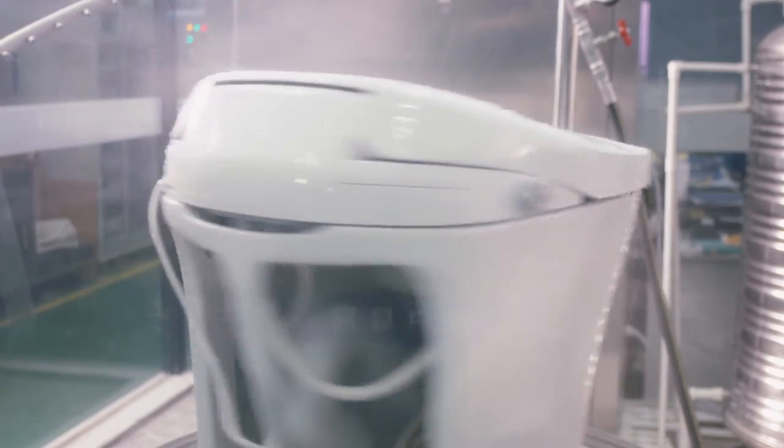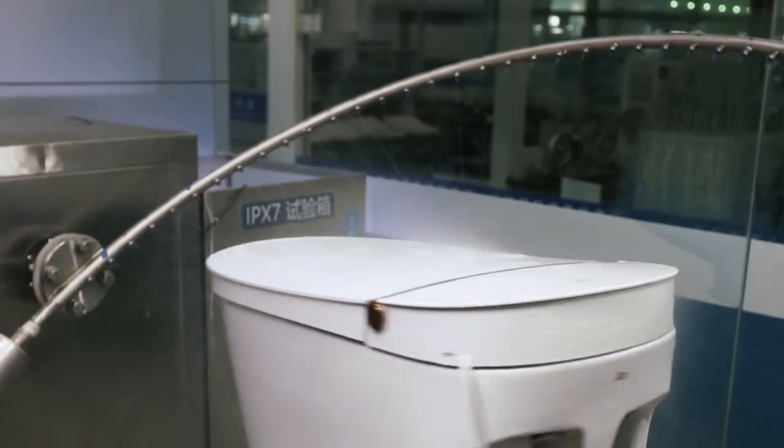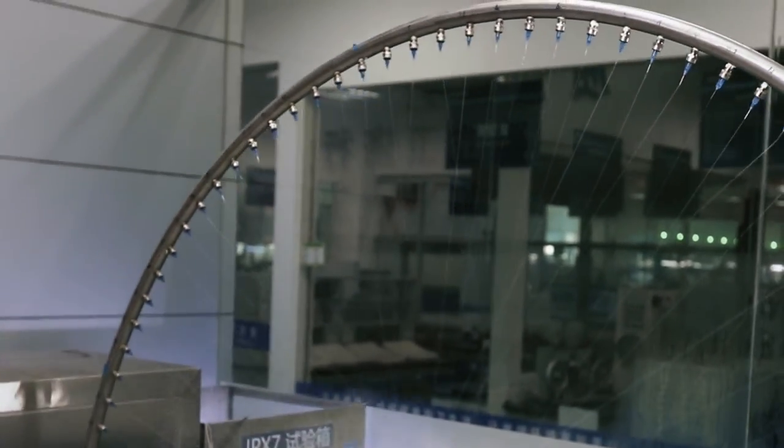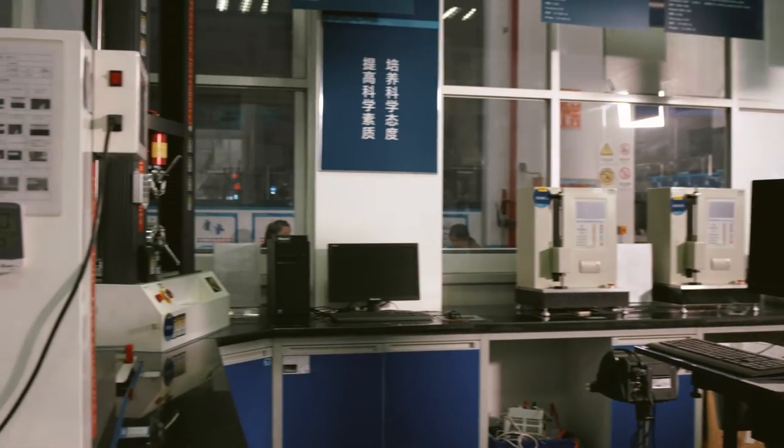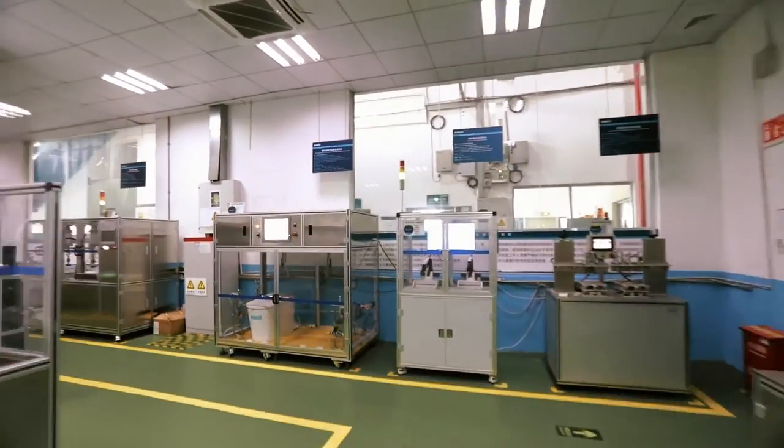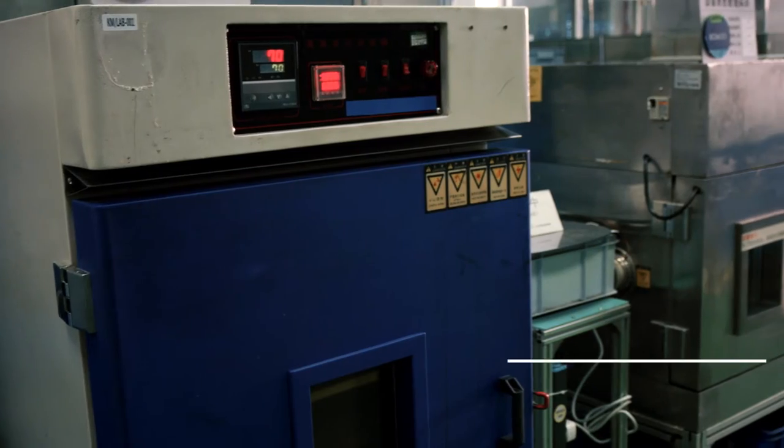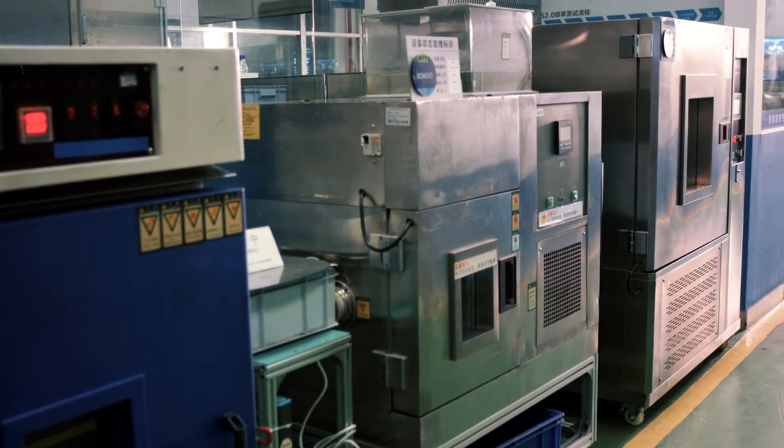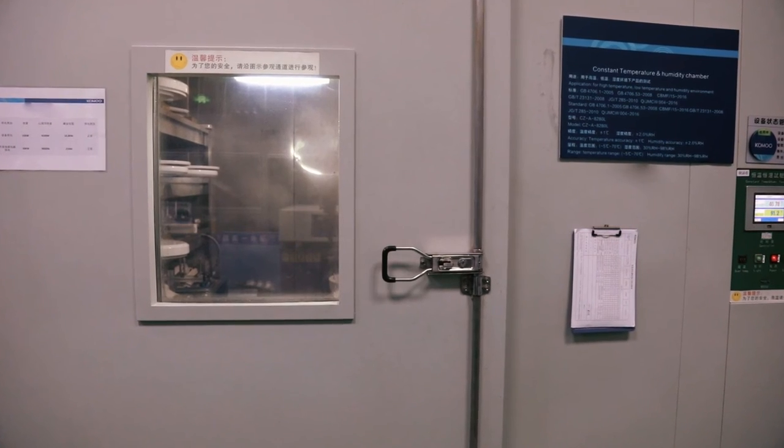Here toilets undergo the spray test with all the electric components turned on to ensure the safety of use even when you take a shower and accidentally spray water over the toilet. Material safety is tested in this survey room. Here workers test the toilets' performance in harsh conditions.